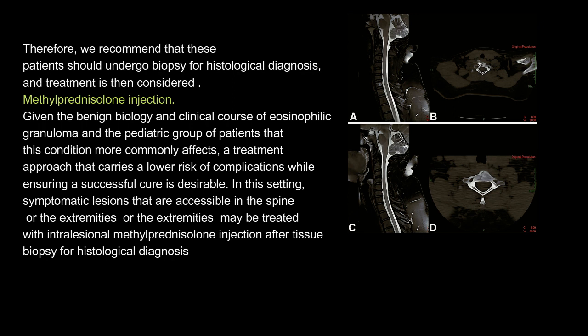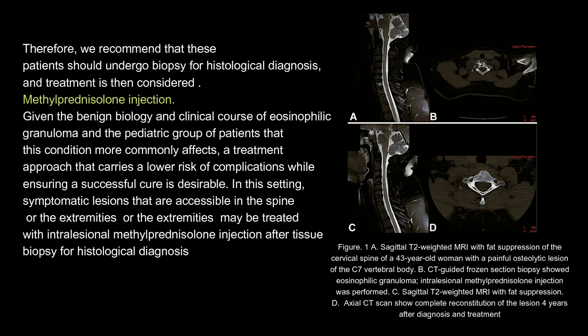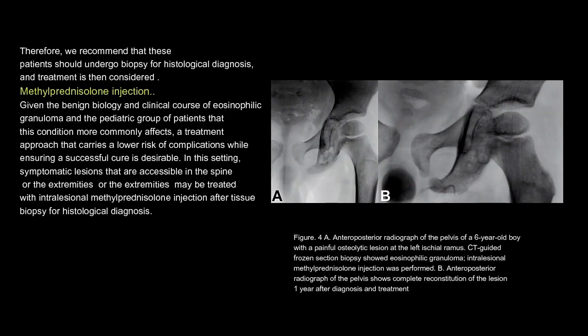Figure 1a: sagittal T2-weighted MRI with fat suppression of the cervical spine of a 43-year-old woman with a painful osteolytic lesion of the C7 vertebral body. B: CT-guided frozen section biopsy showed eosinophilic granuloma; intralesional methylprednisolone injection was performed. C: sagittal T2-weighted MRI with fat suppression. D: axial CT scan show complete reconstitution of the lesion four years after diagnosis and treatment.